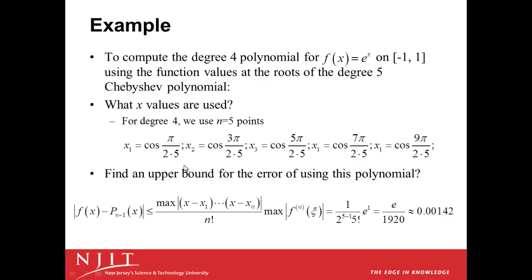Let's consider an example. Suppose we wanted to compute the fourth degree polynomial for f of x is e to the x on minus 1 to 1. What values of x should we use if we use those Chebyshev polynomial roots? And so we're going to use five points for a fourth degree polynomial. If we plug in, that means our n is equal to 5. The denominator 2n is 2 times 5 or 10. And we have cosine of pi over 10, cosine of 3 pi over 10, cosine of 5 pi over 10, cosine of 7 pi over 10, and cosine of 9 pi over 10. Notice that if we went further to the next value, cosine of 11 pi over 10, that just repeats this last value. So that gives us five values on the interval from minus 1 to 1.